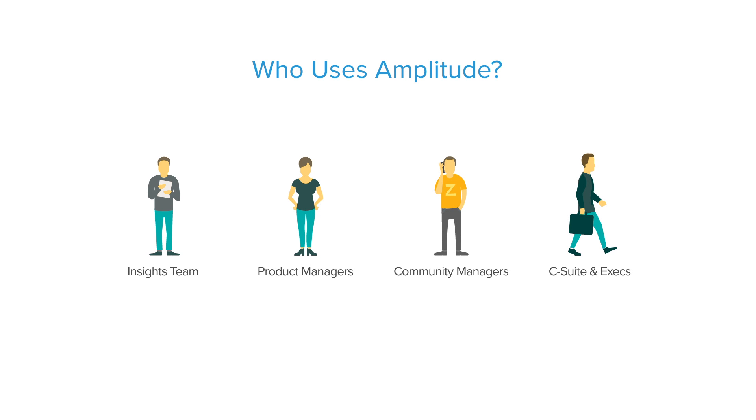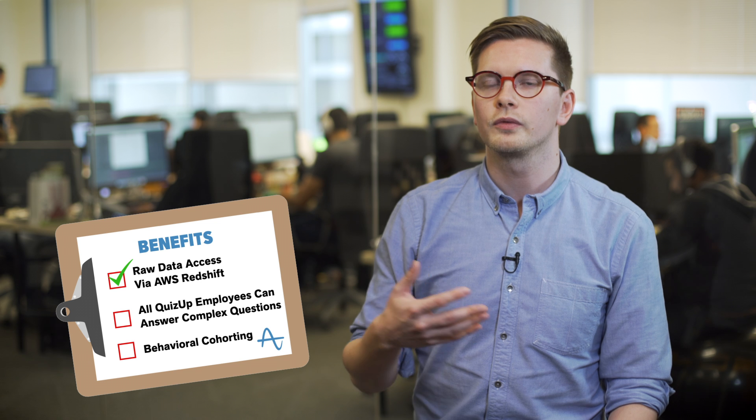Our needs for analytics have grown substantially since we launched the game in 2013. Some of the things we think are crucial are easy-to-use tools so that everybody at the company can actually get data without having to request it from the analytics team. Almost every team at the company uses Amplitude to some extent — our product managers use it a lot, but even our community managers and C-level executives use Amplitude to get a sense of how the community is growing and dig into metrics that are specifically relevant to them.